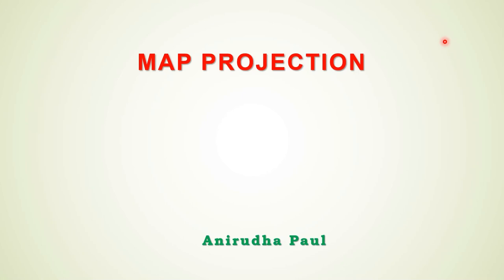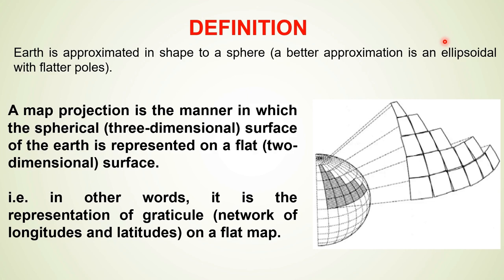In today's class we discuss about map projection. The earth on which we live is not flat — it is spherical in shape. So a globe is the best model of the earth. Map projection is the manner in which the three-dimensional surface of the earth is represented on a flat surface, that is the network of latitudes and longitudes — the graticule — represented on a flat map.